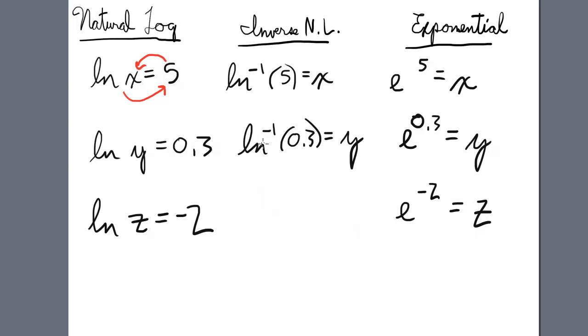As the inverse natural log format, that would be inverse natural log of negative 2 equals z.